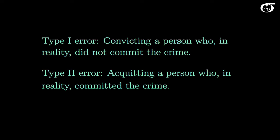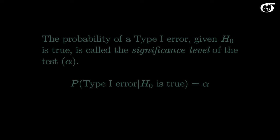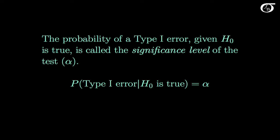A type 2 error is acquitting a person who, in reality, committed the crime — in other words, not rejecting the null hypothesis when it is in fact false. Nobody likes the idea of spending the rest of their life in jail for a crime they did not commit, and so as a society we've decided to make the probability of a type 1 error small by using language like beyond a reasonable doubt. The probability of a type 1 error, given the null hypothesis is true, is called the significance level of the test, and it's typically represented by alpha. We get to pick the value of alpha that we feel is appropriate for any given problem.